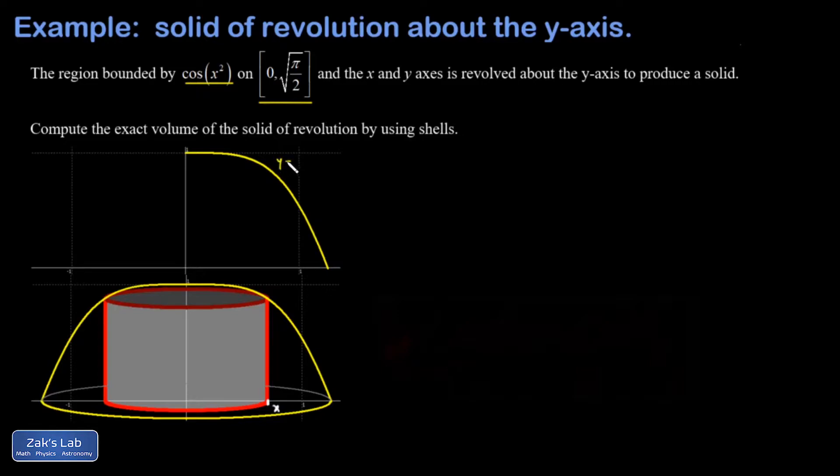Now given that this curve is y equals cosine of x squared, that means the y coordinate corresponding to this x value is given by cosine of x squared and that's the height of the shell.